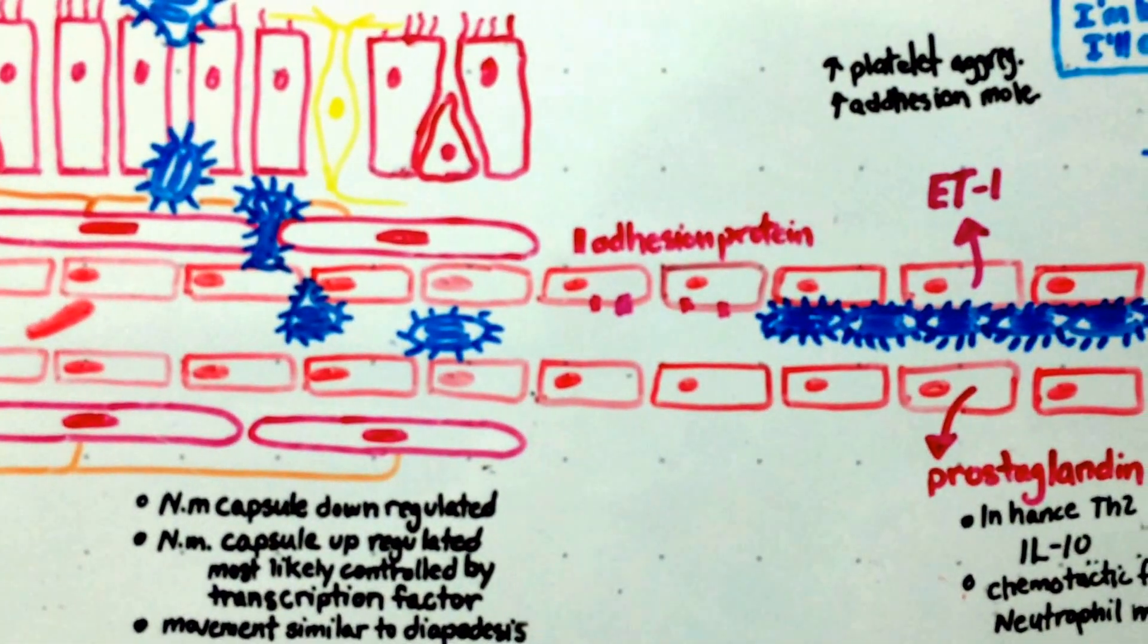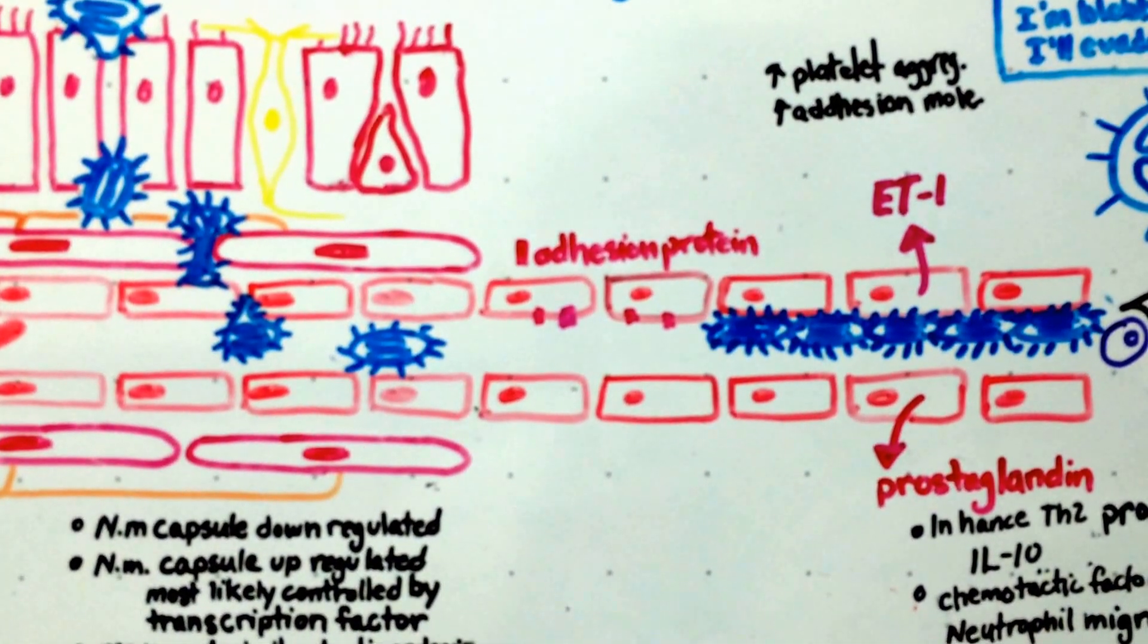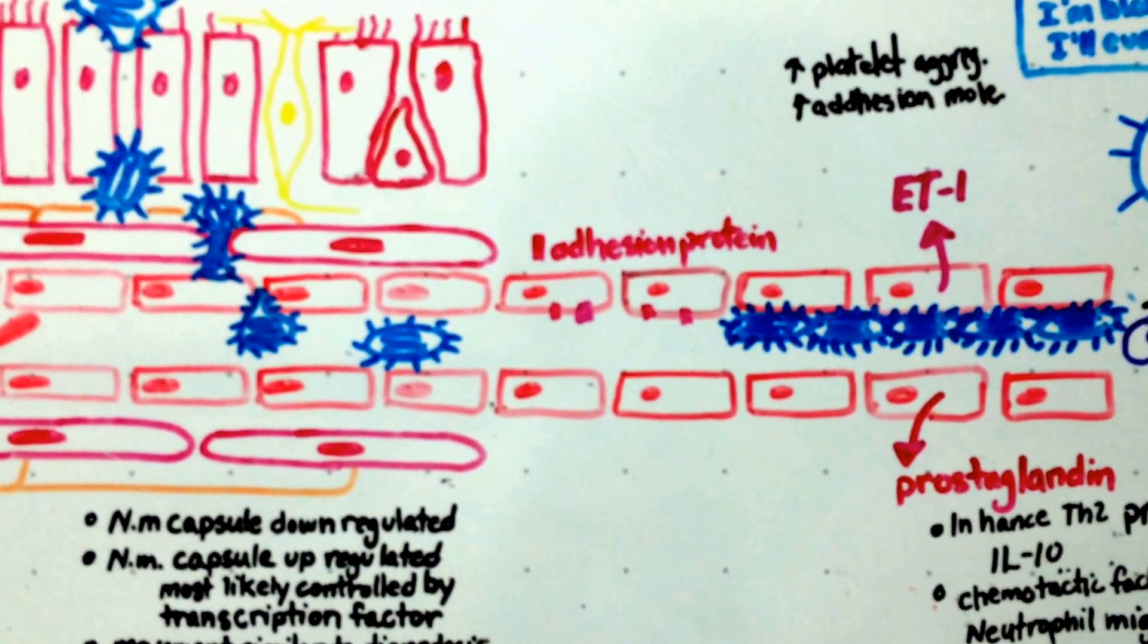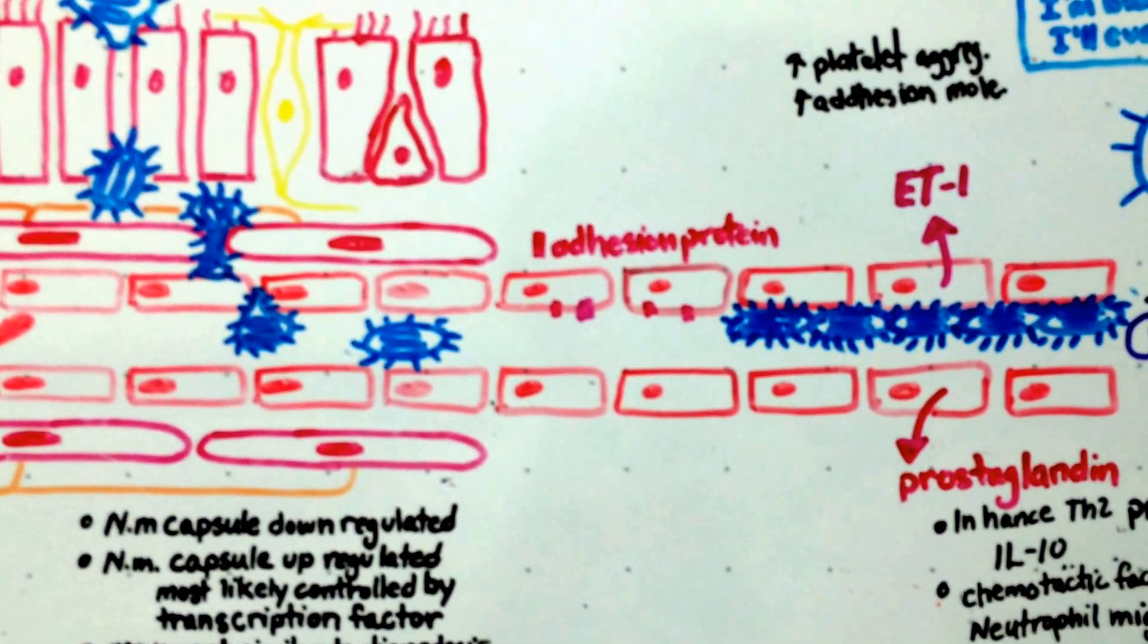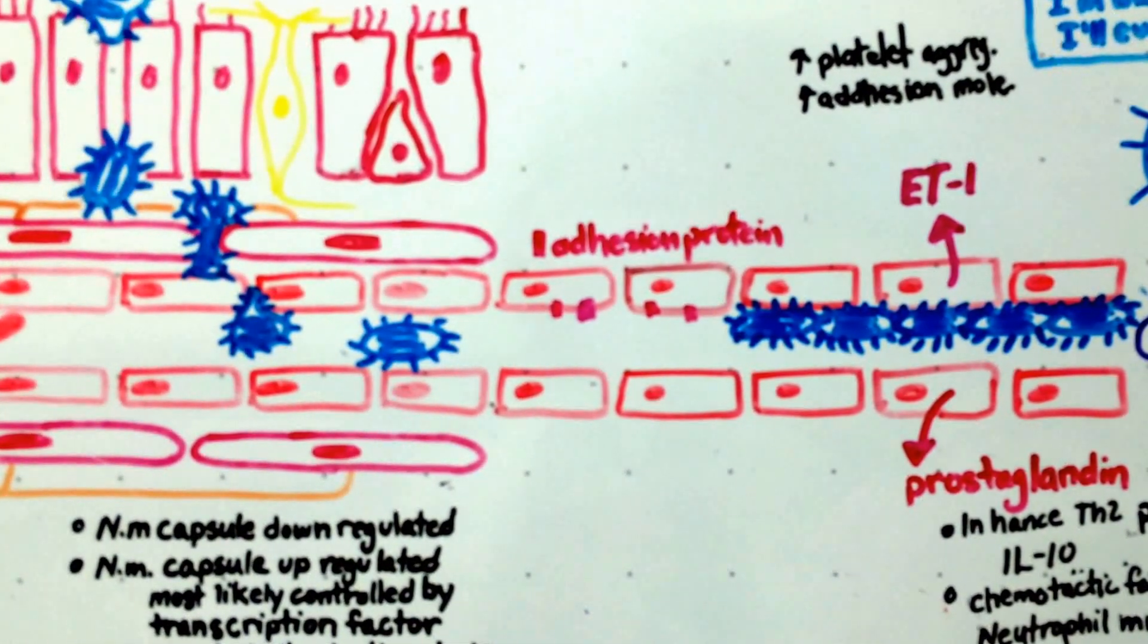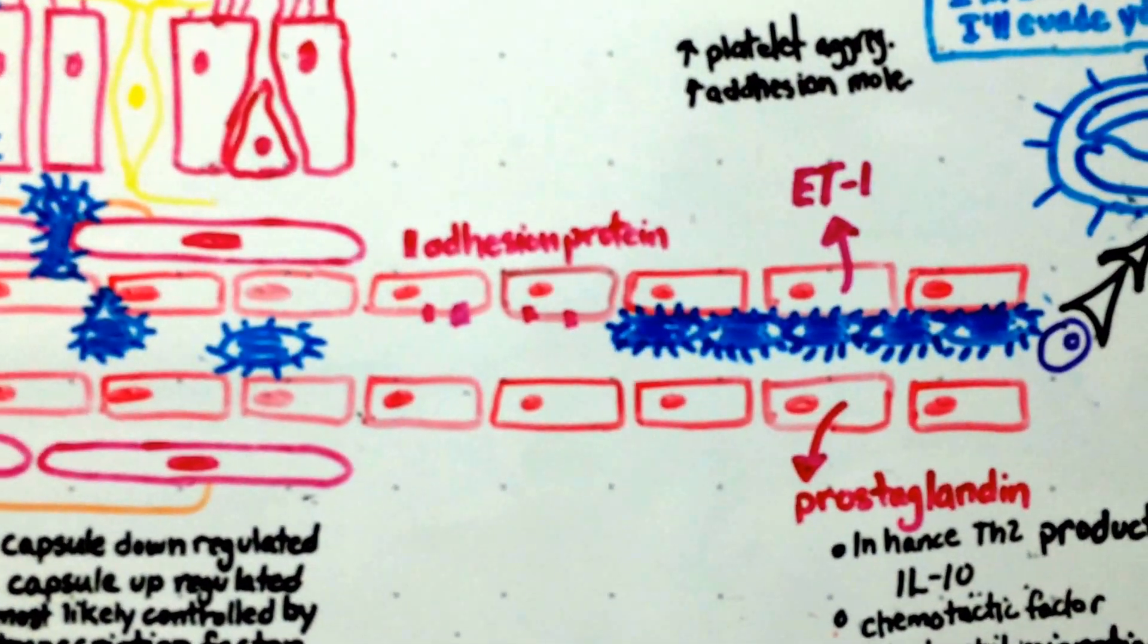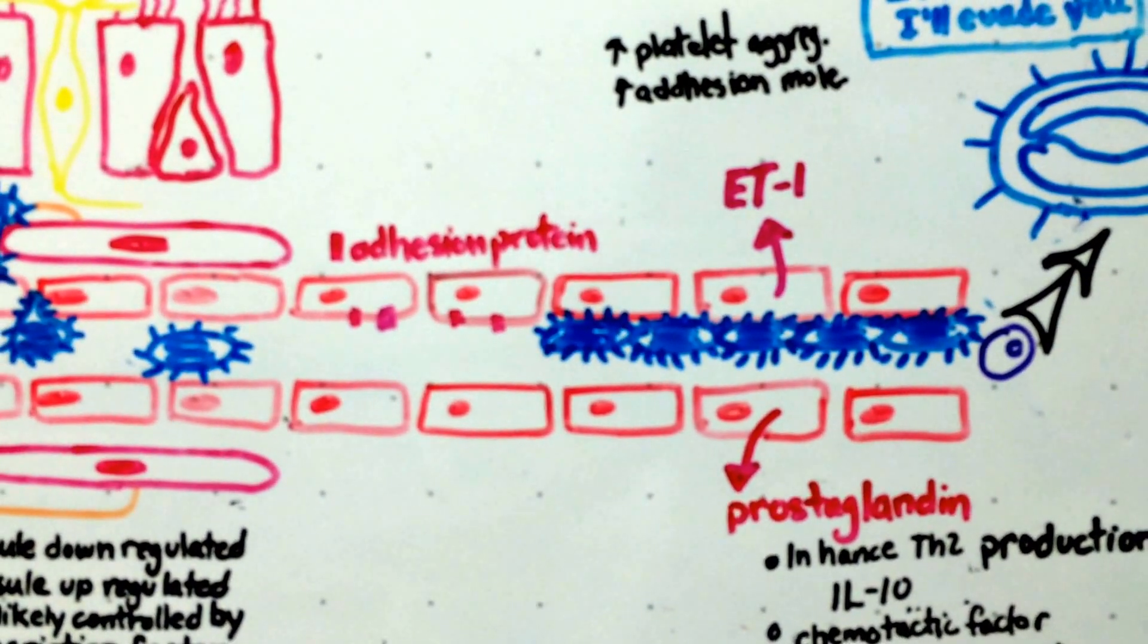On the endothelium walls, there's adhesion factors. These adhesion factors are normally used for the neutrophils and the macrophages. The neutrophils roll along the cell wall. The macrophages use them for diapedesis into the surrounding tissue. Yes, the bacteria take advantage of that.